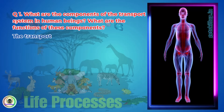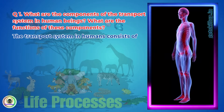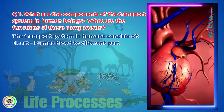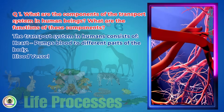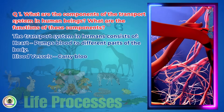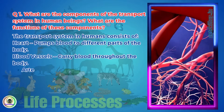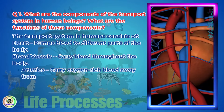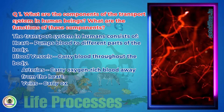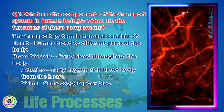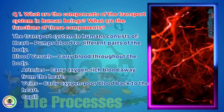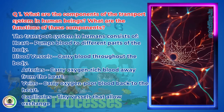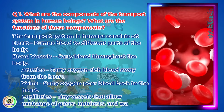The transport system in humans consists of: Heart, which pumps blood to different parts of the body. Blood vessels carry blood throughout the body. Arteries carry oxygen-rich blood away from the heart. Veins carry oxygen-poor blood back to the heart. Capillaries are tiny vessels that allow exchange of gases, nutrients, and waste.